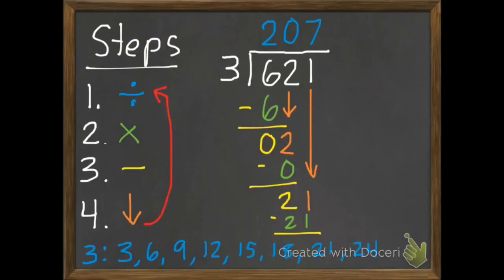Subtract. I'm kind of running out of room. That leaves us with nothing. And there's nothing left to bring down. So we're done. No remainders. Our answer is 207.